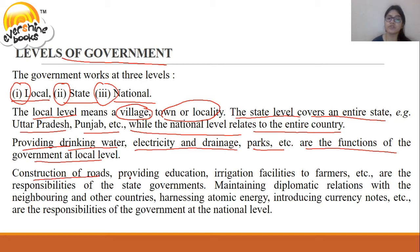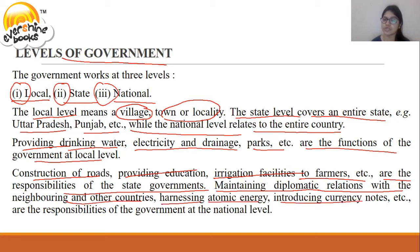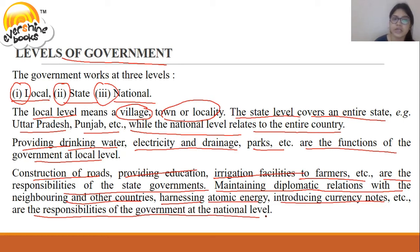The construction of roads, providing education, and irrigation facility to farmers are the responsibility of the state government. States cover an entire state, for example Uttar Pradesh and Punjab. Maintaining diplomatic relations with neighbouring and other countries, furnishing atomic energy, and introducing currency notes are the responsibility of the government at the national level.